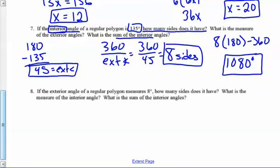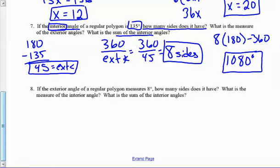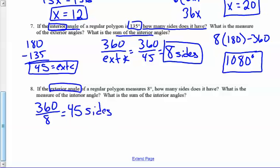Number 8 is the same question, except they gave me the exterior angle. So if they gave me the exterior angle, all I need to do is go 360 divided by 8. That means I have 45 sides. What is the measure of the interior angle? Well, that's 180 minus 8, which is 172 degrees.